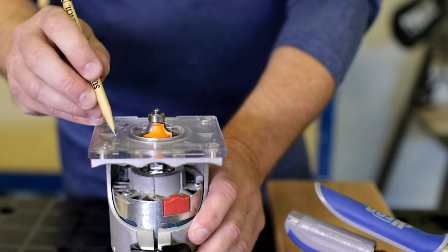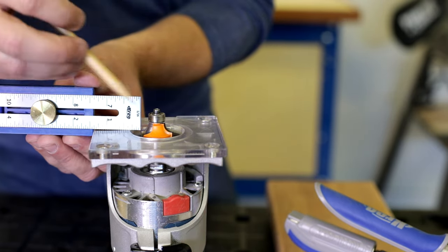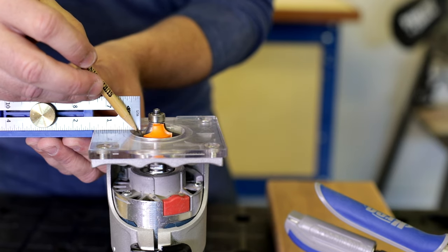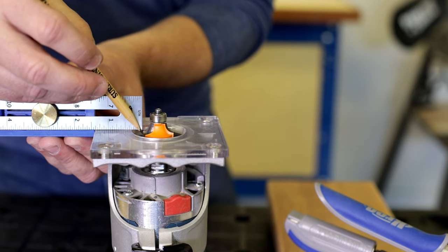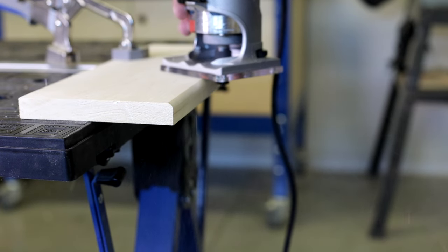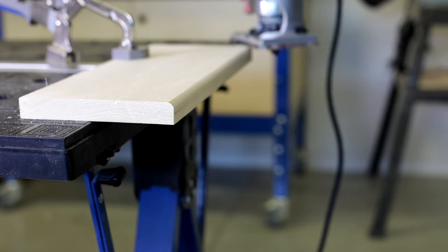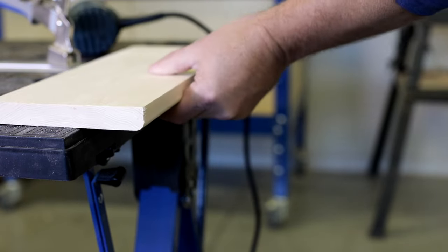To create the round over, just install the bit in your router and adjust the base so this radius part of the bit's cutter is flush with or slightly above the base. Then round over the edge by moving the router from left to right. The bearing on the bit follows the board. If you want to round over both edges, just flip the board over and make another pass.